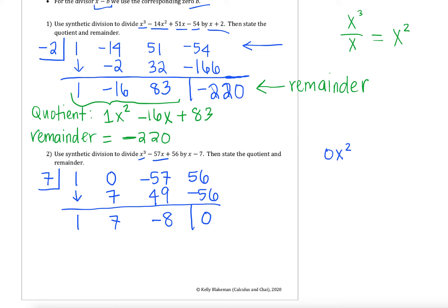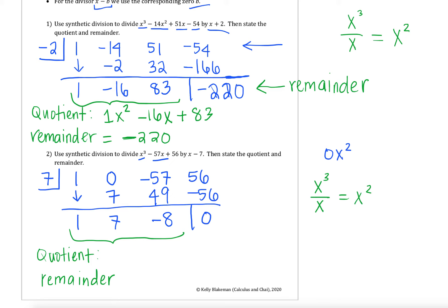Now that we've finished our synthetic division, I want to find the quotient and the remainder. Our quotient is going to come from these first three numbers — 1, 7, and negative 8 — and our remainder is that last number. Since I started with an x cubed and divided through by a linear term, I'm going to end up with a highest power of x squared. So we get x squared plus 7x minus 8 as our quotient, and our remainder is equal to zero.